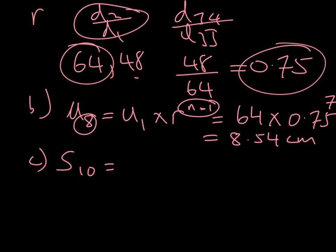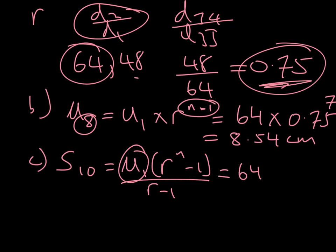Again here, the general formula if we wanted to work this out for the sum would be the first term multiplied by the common ratio to the power n minus 1, all over the common ratio minus 1. So we're just going to substitute in these numbers. We know the first term in the sequence is 64, we know the common ratio is 0.75, that's 0.75 to the power n, which here is 10.